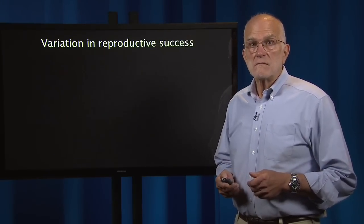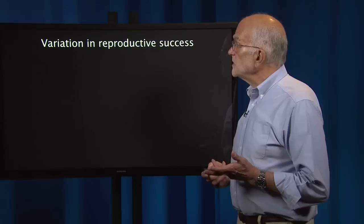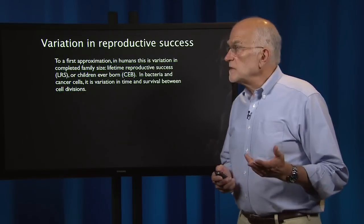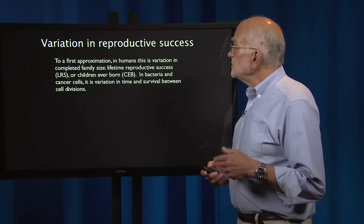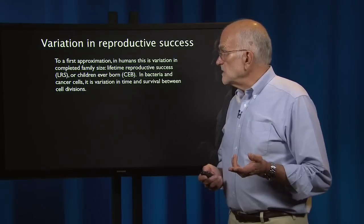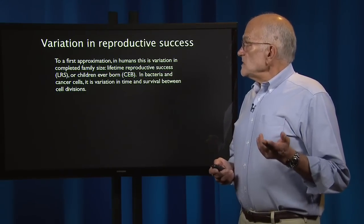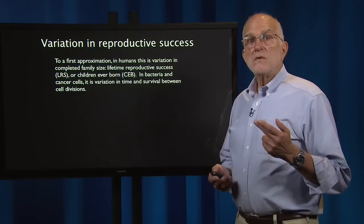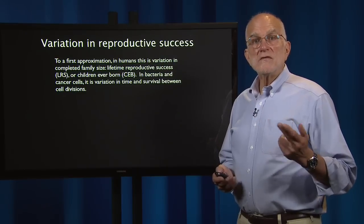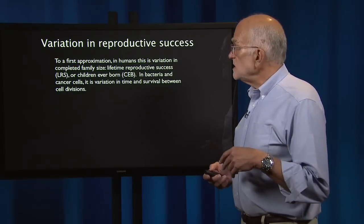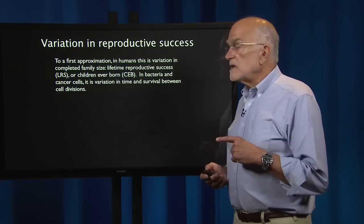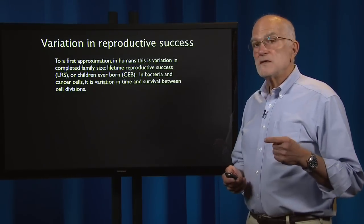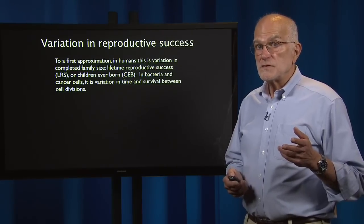Let's unpack them. First, variation in reproductive success. In humans, to a first approximation, this is variation in completed family size — lifetime reproductive success, abbreviated LRS, or children ever born, abbreviated CEB. In bacteria and cancer cells, it's variation in time and survival between cell divisions.